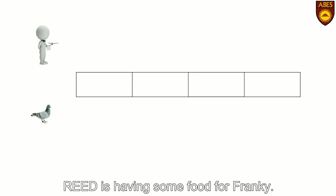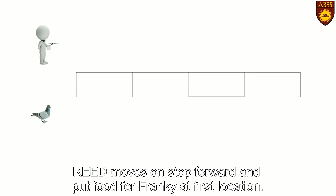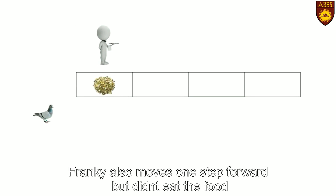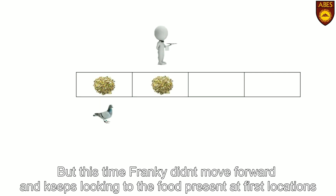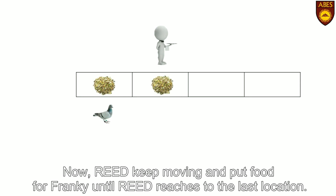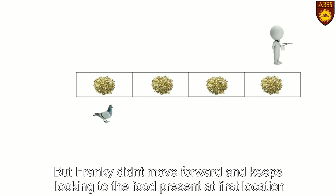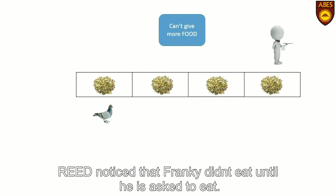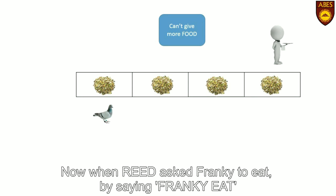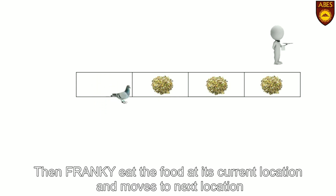Reed moves one step forward and puts food for Frankie at the first location. Frankie also moves one step forward but didn't eat the food. Reed again moves one step forward and puts food for Frankie at the next location, but this time Frankie didn't move forward and keeps looking at the food present at the first location. Reed keeps moving and puts food for Frankie until Reed reaches the last location, but Frankie didn't move forward and keeps looking at the food at the first location. Note that Reed cannot put food after the last location.